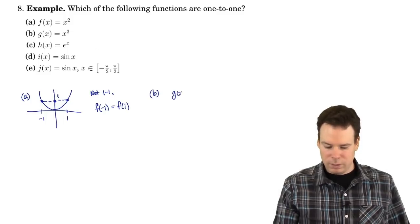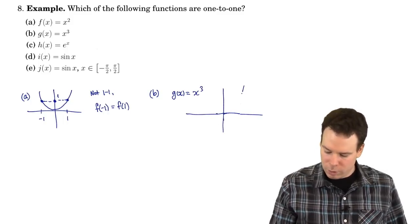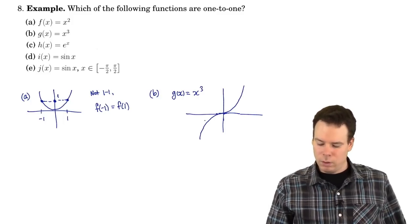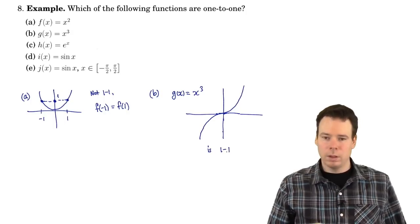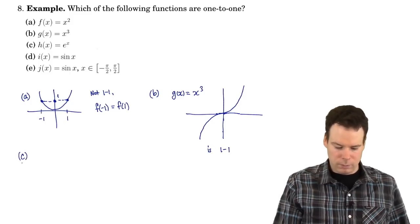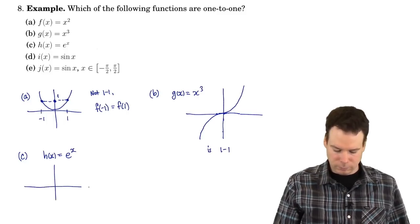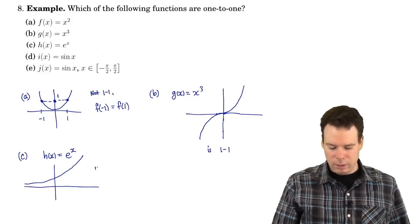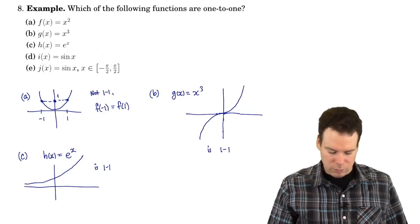What about g(x) = x³? Is that one-to-one? A cubic function looks like this, and for every input it seems to give rise to a unique output, so it is one-to-one. What about h(x) = eˣ, the exponential function of base e? That function looks like this, and again it is one-to-one. Each input gives rise to a unique output.